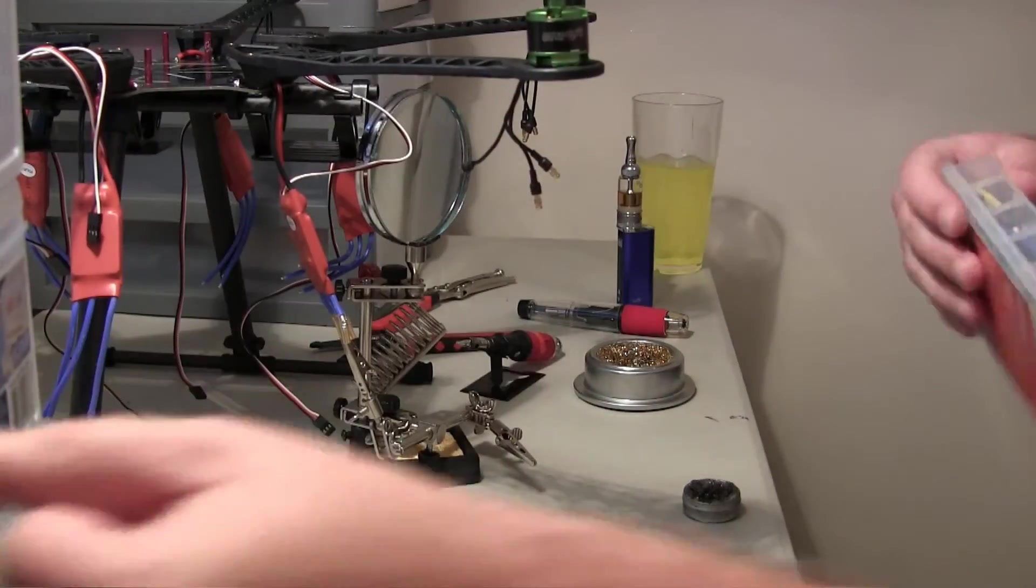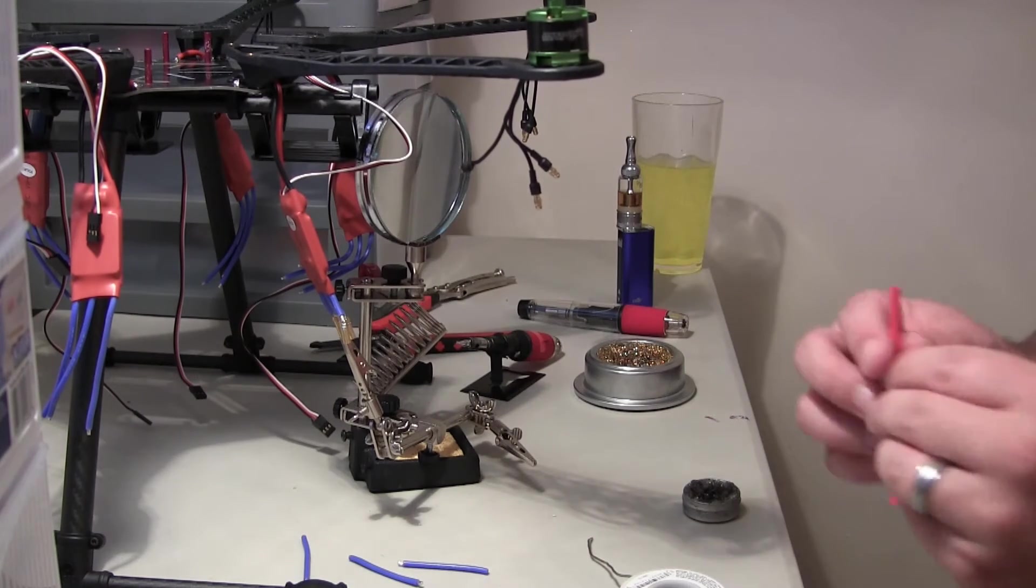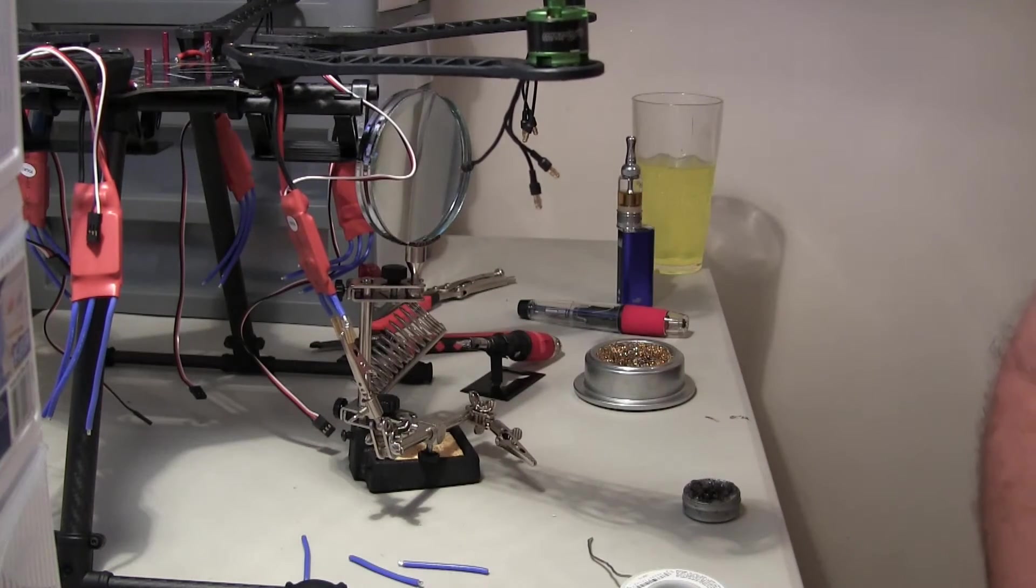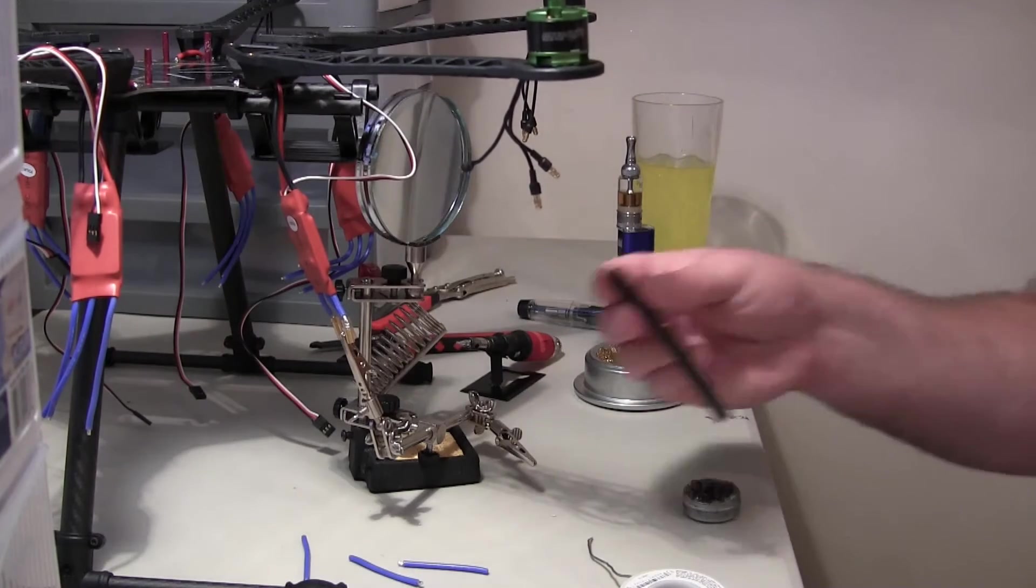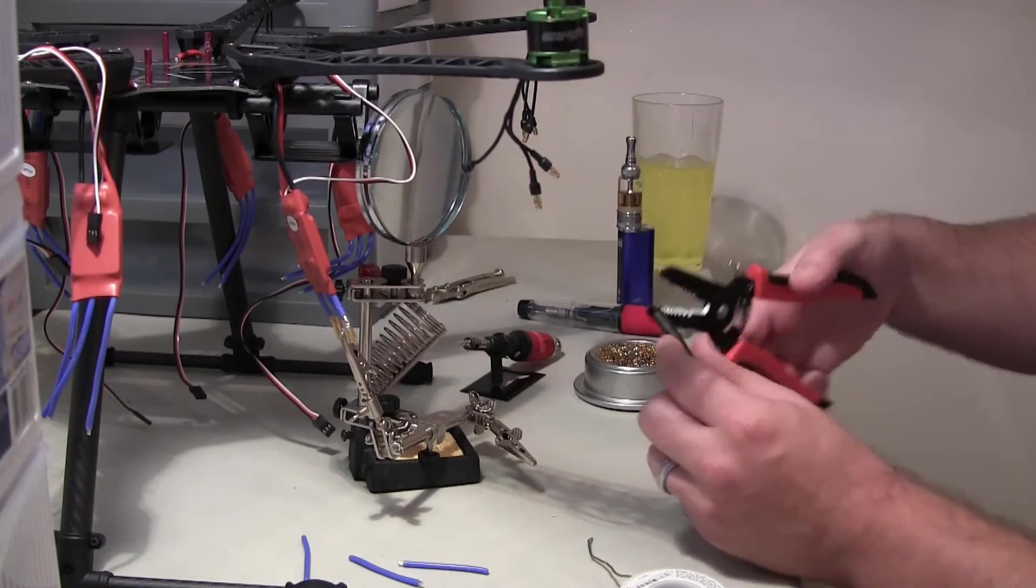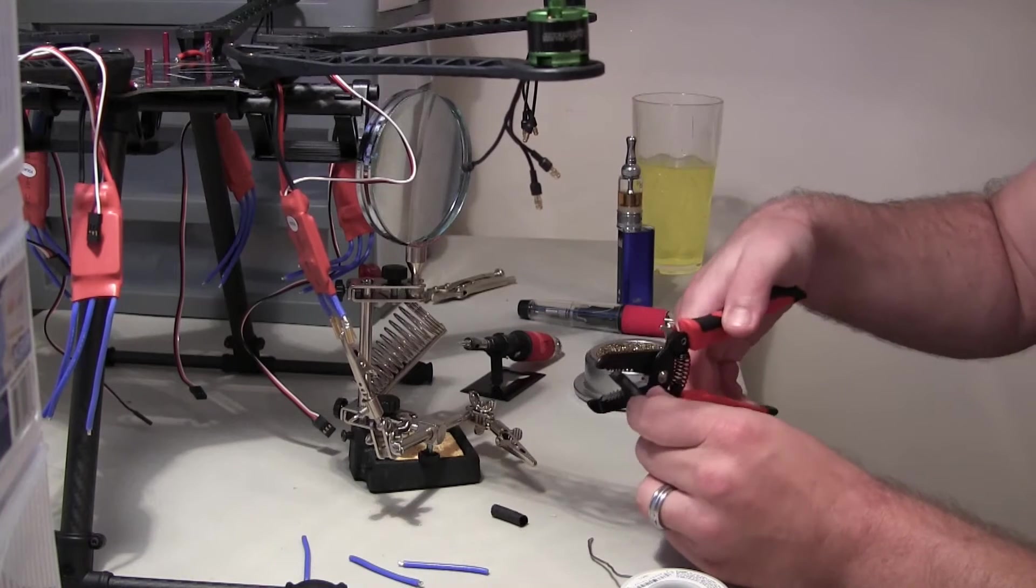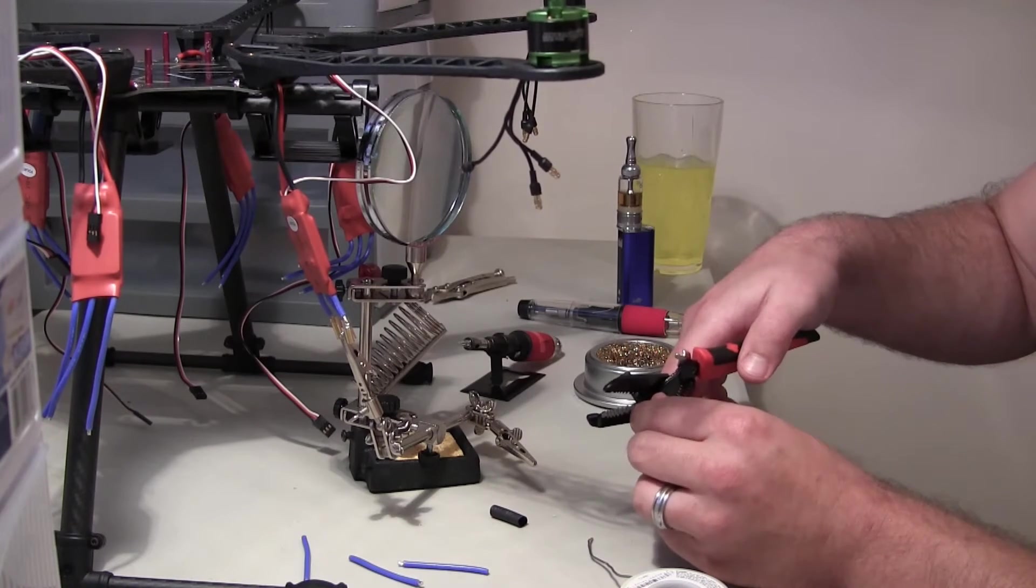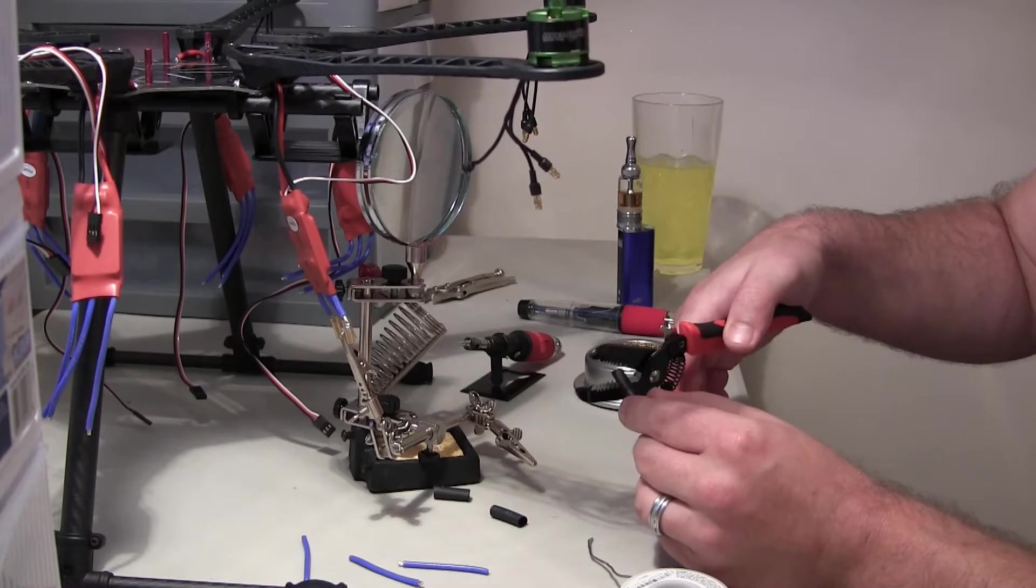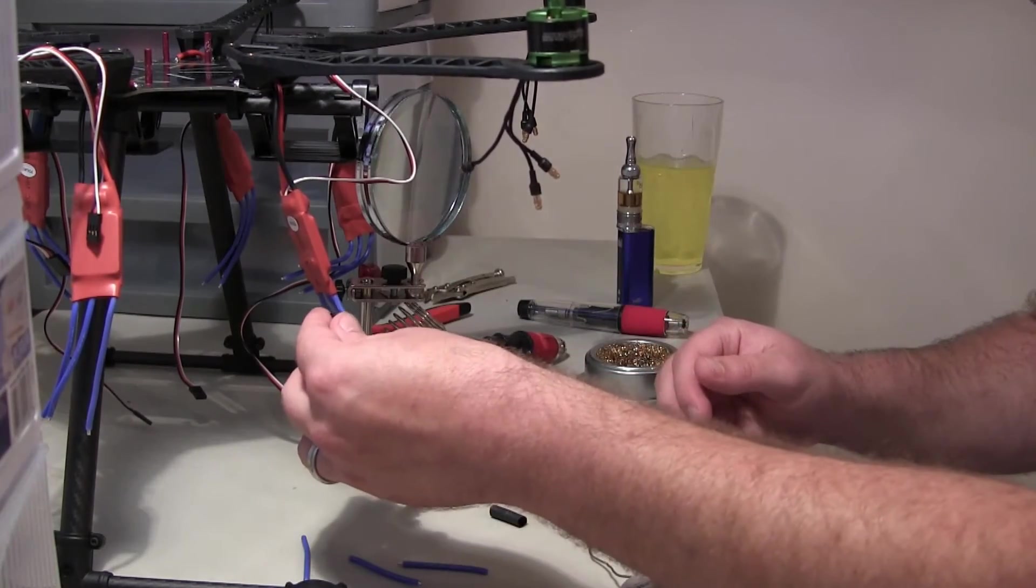I got colored heat shrink, all kind of stuff. That's too small. That'll work. And you don't have to be exact with this stuff. It's just heat shrink. You're just protecting the connection.